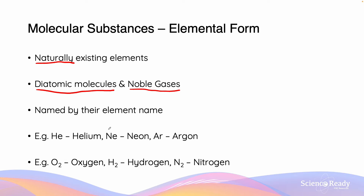Molecular substances which are in elemental form are simply named by the element name provided on the periodic table. So for the monoatomic noble gases, helium is simply helium, neon is neon, and argon is argon. Diatomic molecules in elemental forms such as O2, H2, and N2 are given the names oxygen, hydrogen, and nitrogen respectively.